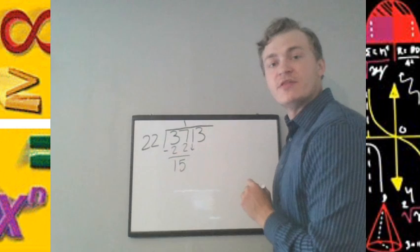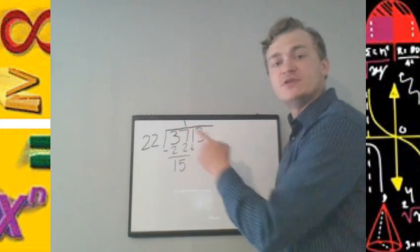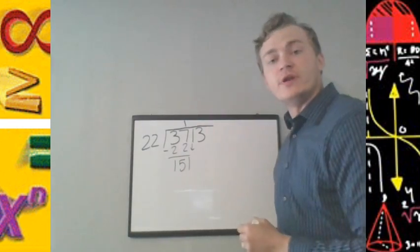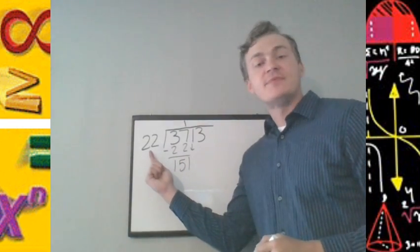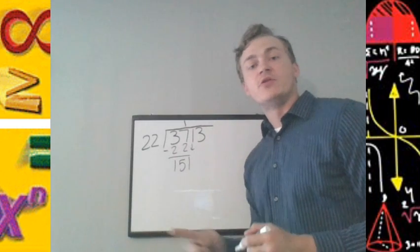But now we bring down the next digit that we have and used up top. We've used the 3 and the 7. Now we want to bring down the 1. And the question here is, how many times will 22 go into the 151?